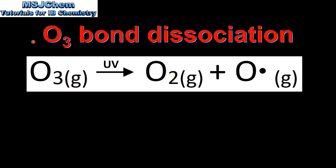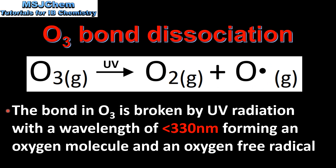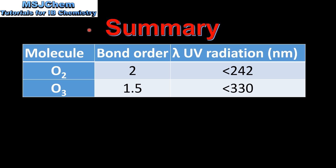Now we will compare the previous slide to the bond dissociation of ozone. In this equation we have the ozone molecule dissociating in the presence of UV light to form an oxygen molecule and one oxygen free radical. The bond in ozone is broken by UV radiation with a wavelength of less than 330 nanometers, forming an oxygen molecule and an oxygen free radical. Let's finish with a summary.